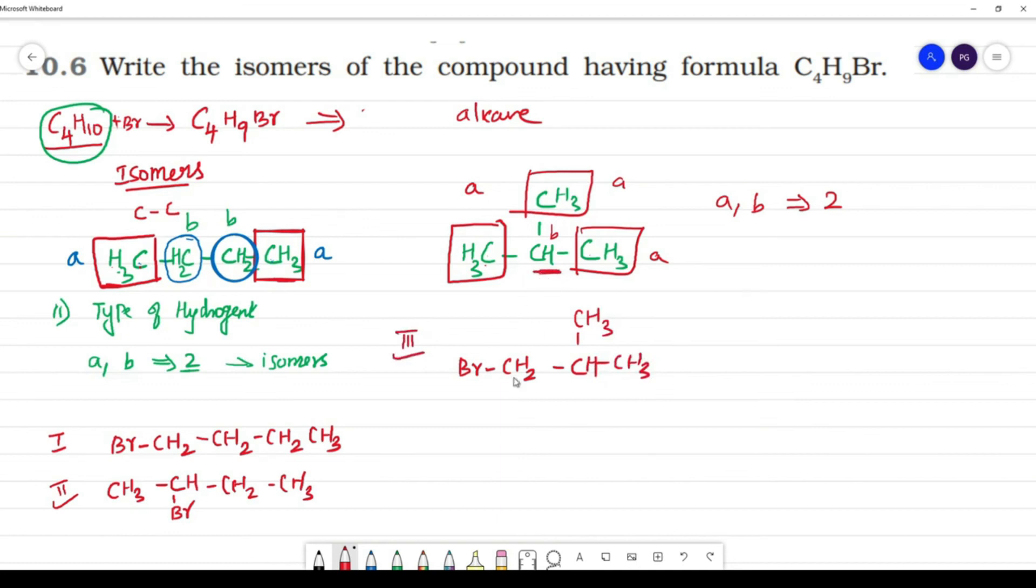How many isomers now you have? You have four isomers.